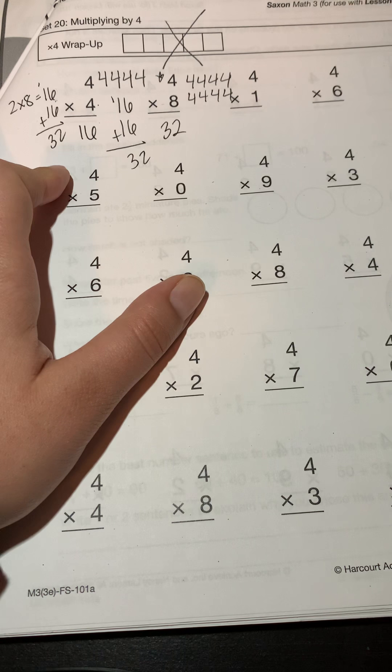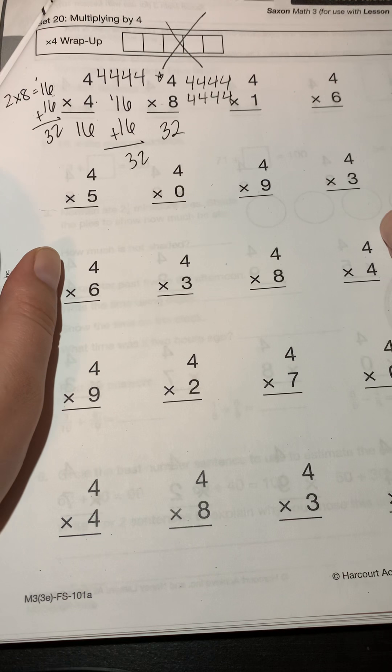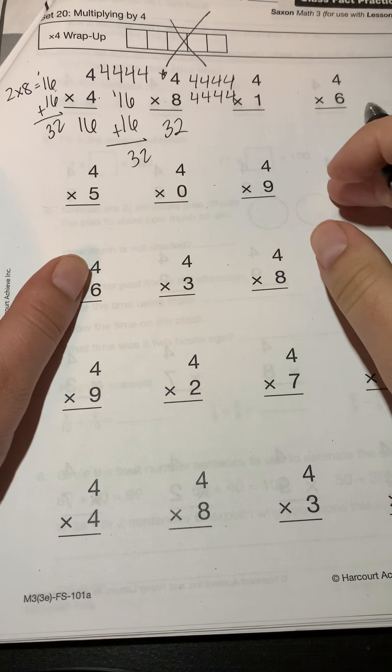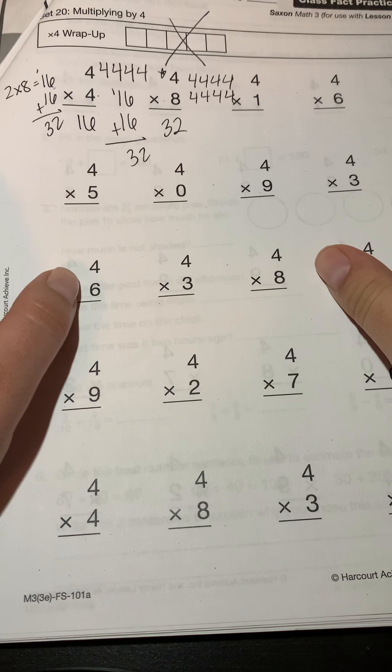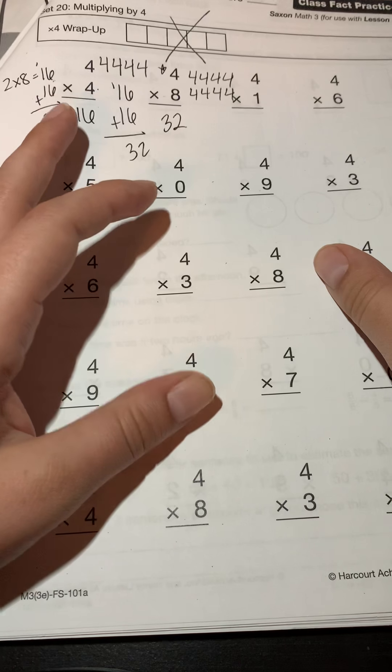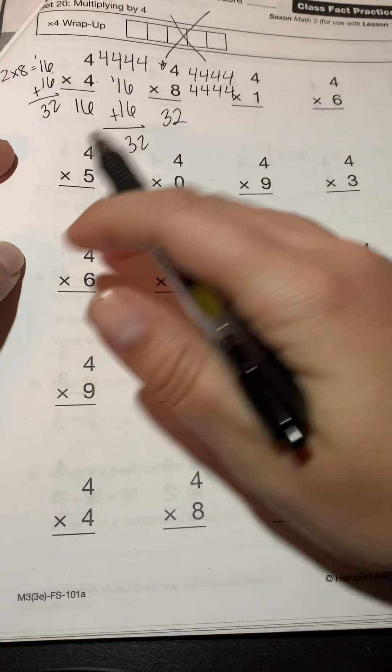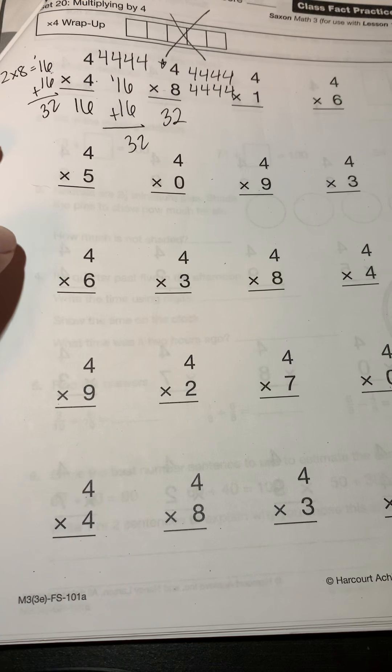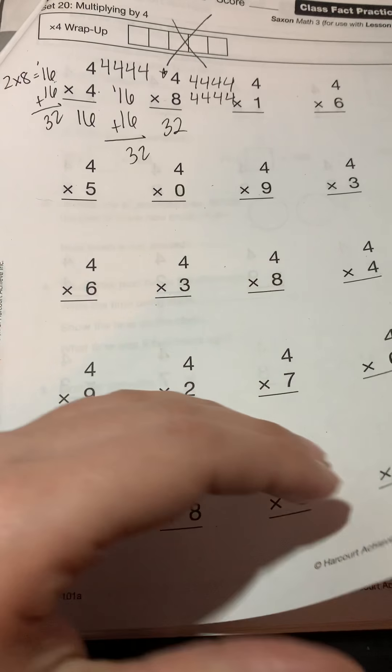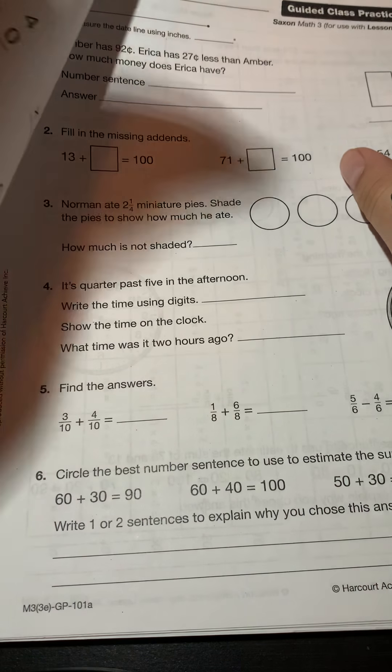So use whichever strategy works best for you. Maybe you're really good at your twos and so doubling the answer for the two is the best way for you to do it. Right now the best thing to do would be to definitely memorize it so you can be quick, but it's important that we can see these concepts here and we can relate these to the things that we already know. All right, lucky you guys, you only have one more math paper today.